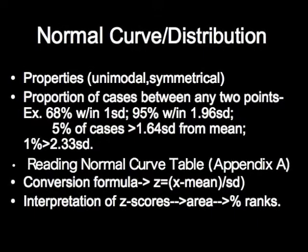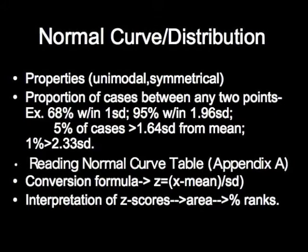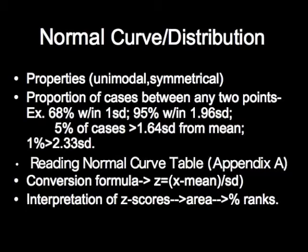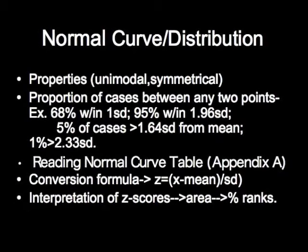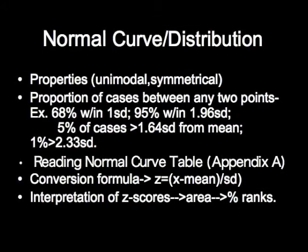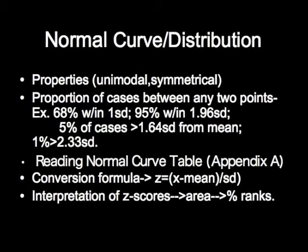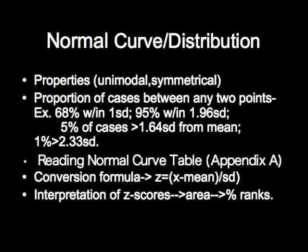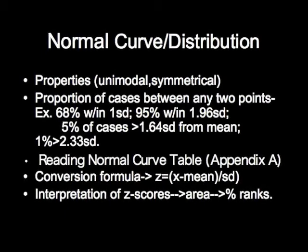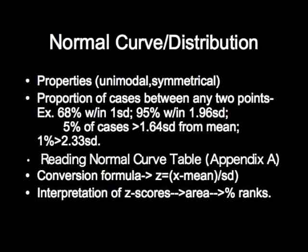The normal distribution has well-defined properties. It's unimodal, meaning it has one mode, and it's symmetrical, meaning half the cases are above the mean and half below. More importantly, a certain percent of cases fall within given standard deviations from the mean. For example, 68% of cases fall within one standard deviation of the mean, and 95% fall within two standard deviations.